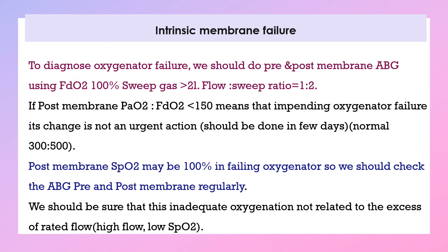To diagnose oxygenator failure, perform pre- and post-membrane arterial blood gas with FiO2 from ECMO side at 100% and sweep gas above 2 liters at a flow-to-sweep gas ratio of 1:2. If post-membrane PO2 divided by FiO2 is less than 150, there is pending oxygenator failure — a change is needed within days. The normal ratio is 300–500; if below 100, an urgent change is required. Post-membrane PO2 may appear normal in a failing oxygenator, so always check pre- and post-membrane ABG. Also ensure inadequate oxygenation is not related to exceeding the rated flow.